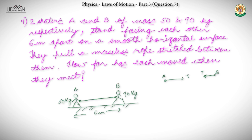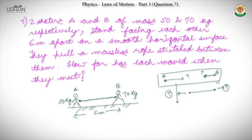There is tension on the A side and tension on the B side. In both free body diagrams we have: Tension = MA·aA in one direction, and Tension = MB·aB in the other direction, where M is mass and a is acceleration.